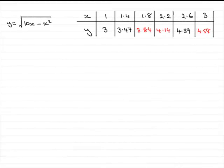Hi, now for the first part of the question, which is very straightforward, all you've got to do is substitute your values of x—1.8, 2.2, and 3—into the equation for y, y equals the square root of 10x minus x squared.